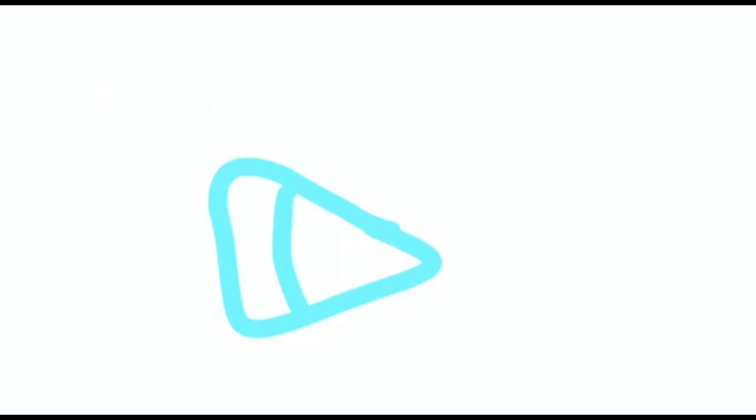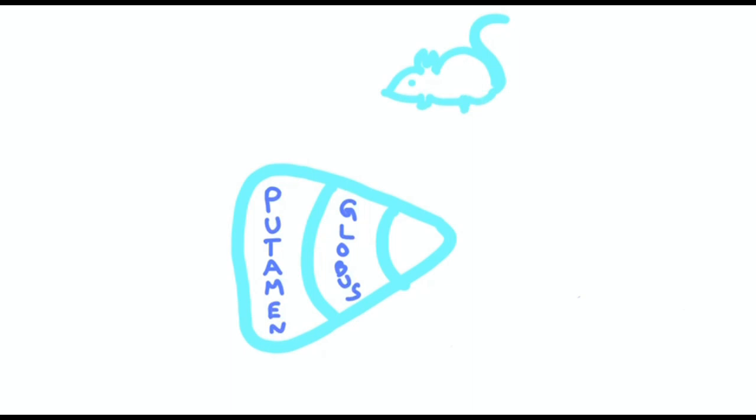The lentiform nucleus comprises the outer putamen and inner globus pallidus (GABA, an inhibitory neurotransmitter), followed by the rat-shaped caudate nucleus which is also inhibitory. Next is the X-shaped nucleus near the caudate, which is